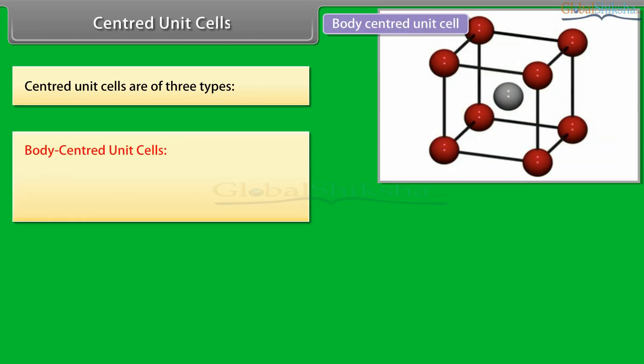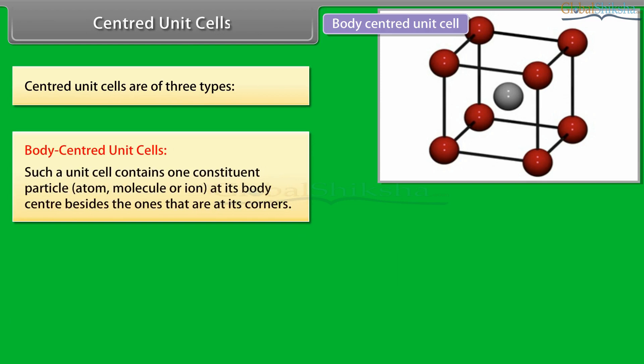Body Centered Unit Cells: Such a unit cell contains one constituent particle—atom, molecule, or ion—at its body center besides the ones that are at its corners.